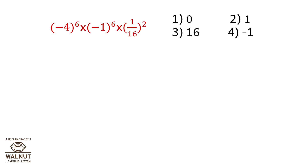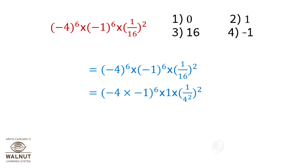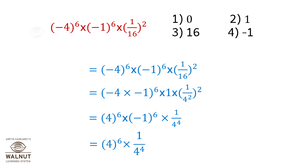Minus 4 raised to 6, multiplied by minus 1 raised to 6, multiplied by 1 upon 16 whole squared, equals minus 4 multiplied by minus 1 raised to 6, multiplied by 1 upon 4 squared, whole squared. This simplifies to 4 raised to 6, multiplied by minus 1 raised to 6, multiplied by 1 upon 4 raised to 4, which equals 4 raised to 6 multiplied by 1 upon 4 raised to 4, which equals 4 raised to 6 minus 4, equals 4 squared, which is equal to 16.